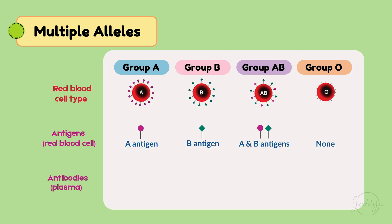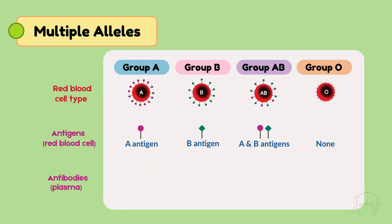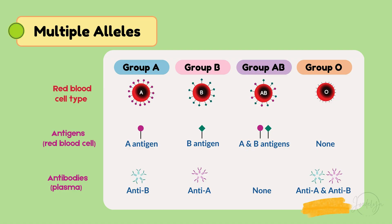Now let's talk about antibodies. Your immune system makes antibodies, which act like security guards — they recognize foreign antigens and attack them to protect the body. Type A has anti-B antibodies. Type B has anti-A antibodies. Type AB has no antibodies, making you the universal recipient. Type O has both anti-A and anti-B antibodies, so it can only receive from O but can donate to anyone — that's why O is the universal donor.